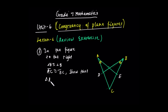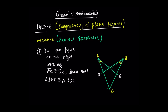We have to show that triangle A, E, C is congruent to triangle B, D, C. In English: given information — angle A is congruent to angle B.